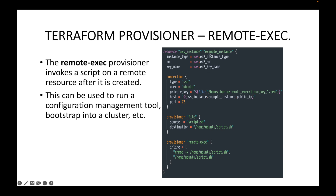Here is my resource block where we are launching our EC2 instance. I have defined my connection block. In the last session the connection block was inside the provisioner block, but this time the connection block is outside the provisioner block. In this case the connection block becomes a global connection setting which can be used with multiple provisioner blocks, whereas in the last session the local connection block was applicable only to that specific provisioner.